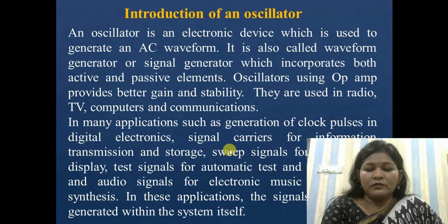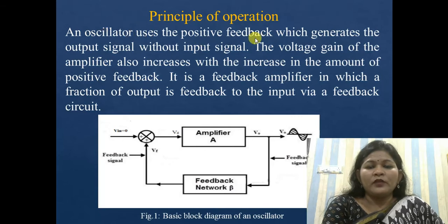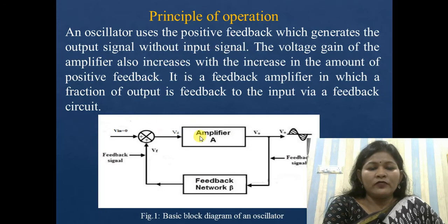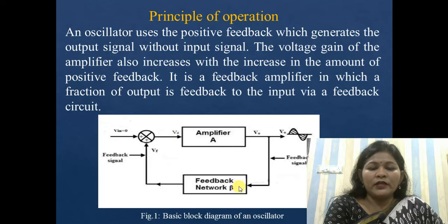We can design the oscillator using an op-amp IC. The principle of operation is that an oscillator uses positive feedback, which generates the output signal without any input signal. In the block diagram, there is an amplifier circuit and a feedback circuit. Here, A is the voltage gain of the amplifier and beta is the feedback gain.